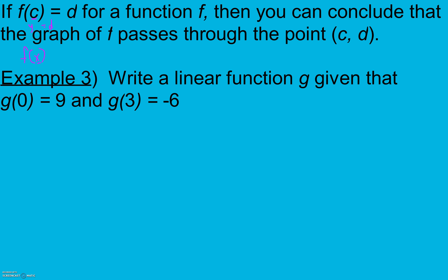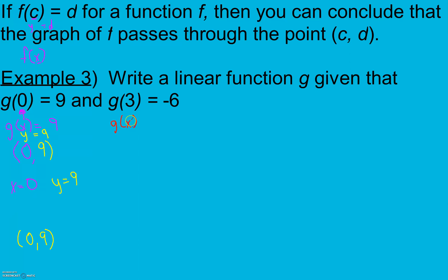We're going to write a linear function g, given that g(0) equals 9 and g(3) equals negative 6. Instead of g of x, we have g of 0 — that's telling us that x equals 0, which goes first in my ordered pair. And since g of x is the same as y, y equals 9, which goes second. So I have the ordered pair (0, 9). The same works for my second pair: x equals 3 and y equals negative 6, giving the ordered pair (3, -6).